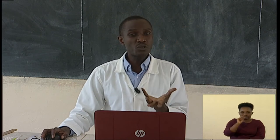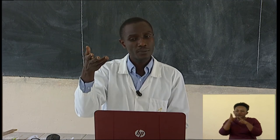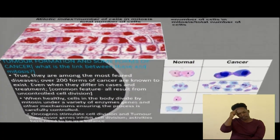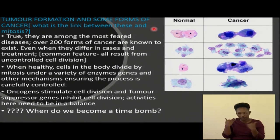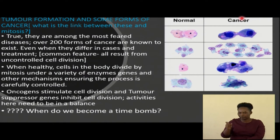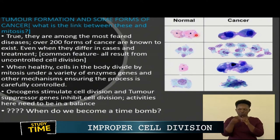Now once we have this index, we should be able to tell: is it normal that every time I extract a tissue for study, only one certain part is dividing and the others are not? And if so, what will happen if cells keep adding up? This takes us to the next slide, where we look at when cells are undergoing normal division and when they are not.